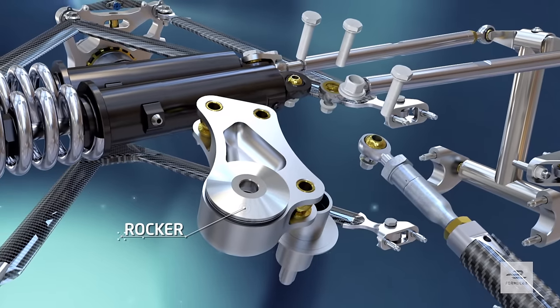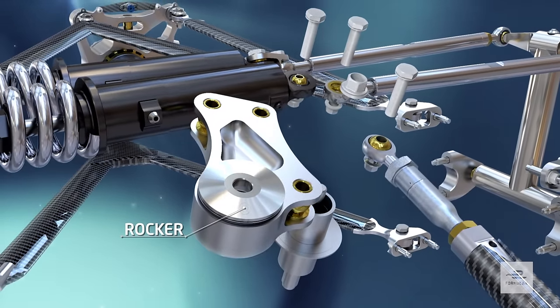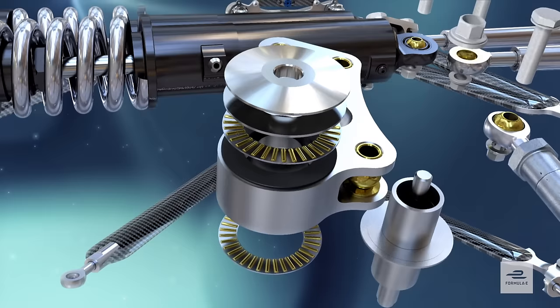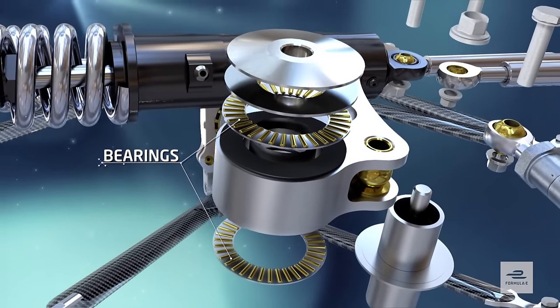Machined rockers connect the shocks to the pushrods and transfer the vertical load seen at the wheels into the horizontal forces managed by the dampers.